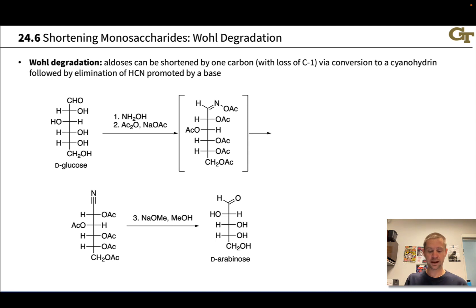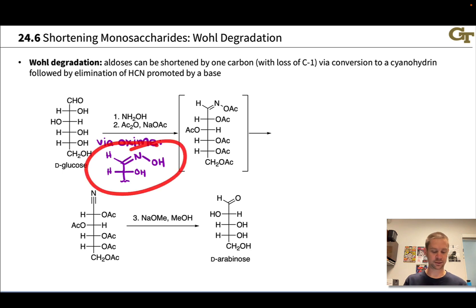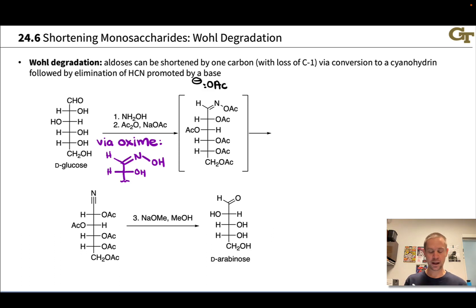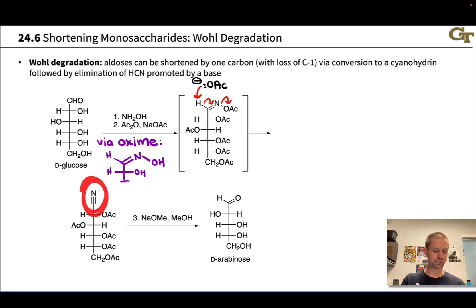Starting with a hexose like D-glucose, we end up with arabinose, a pentose — only five carbons. In the first step, we treat with NH₂OH (hydroxylamine), which condenses with the aldehyde group to create an oxime — analogous to imine formation, creating a C=N double bond and eliminating water. That oxime is then acylated with acetic anhydride and sodium acetate, which installs an acyl group on the oxime OH, but these conditions also acylate all the other OH groups in the molecule — which is why we see all of those acetyl groups in the product. The acetate is there to facilitate elimination of acetic acid from this acetylated oxime intermediate, and this electron flow establishes the C≡N triple bond.